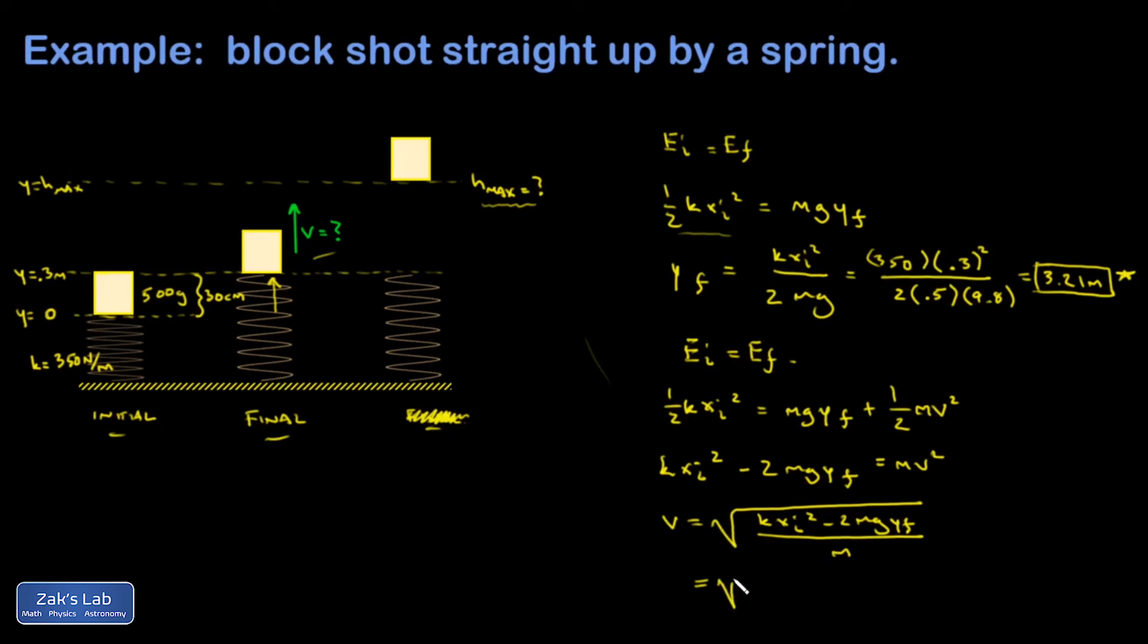So let's plug in our numbers and get a numerical answer. That's 350 for the spring constant. x initial for the compression is 0.3. Square that. Minus 2 times the mass, which is 0.5 in SI units. 9.8 for the acceleration of gravity.